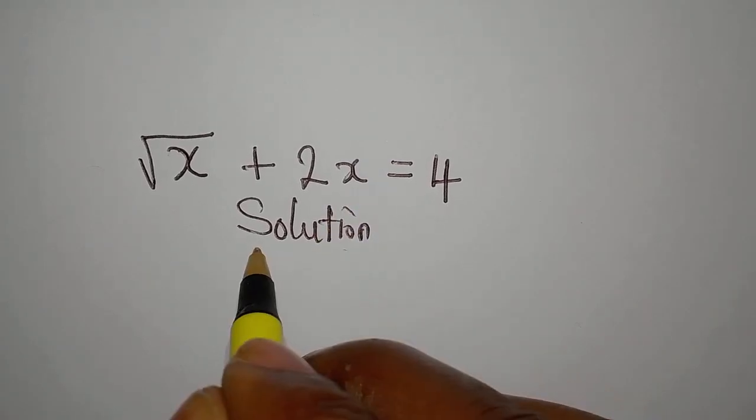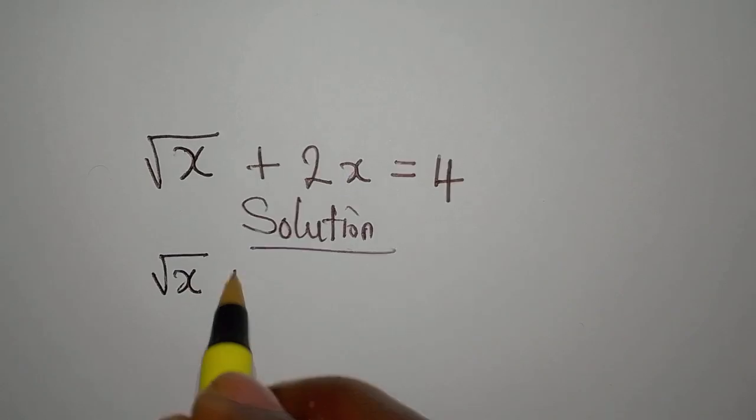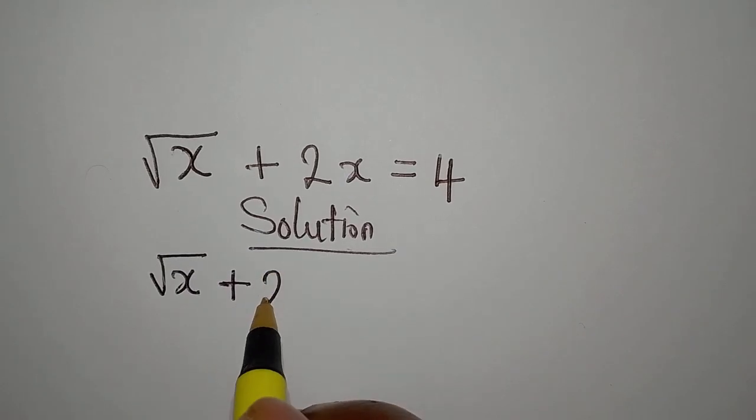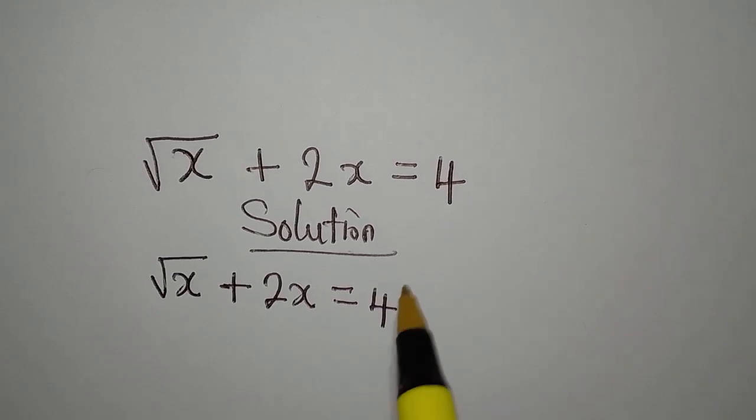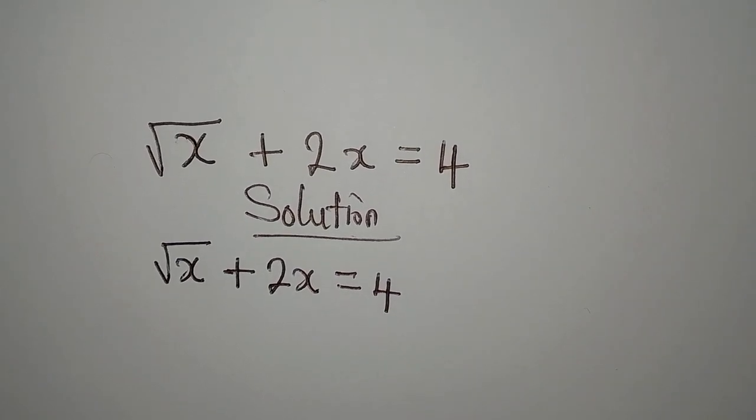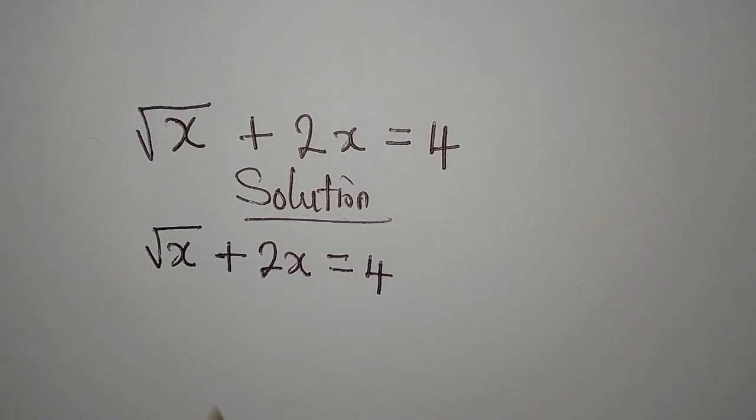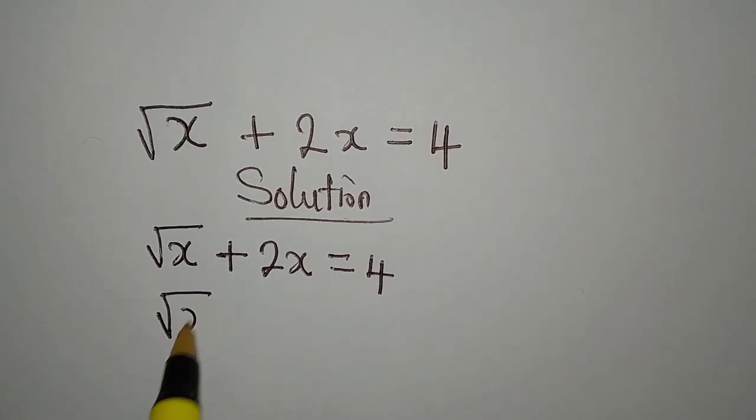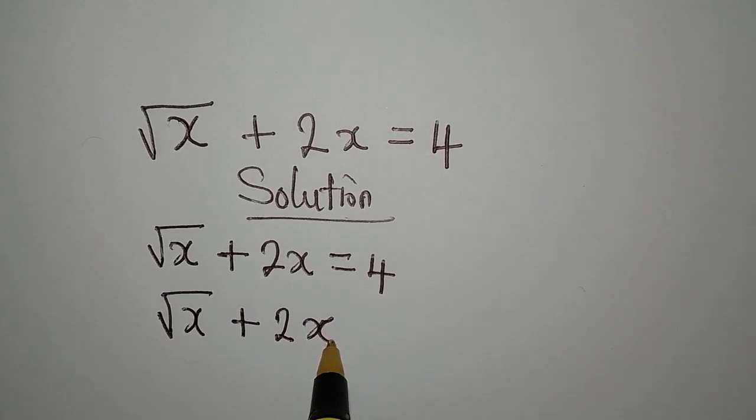Hi, let's work on this very quickly. The square root of x plus 2x equals 4. For us to deal with this, we have to make square root of x the subject of the formula.